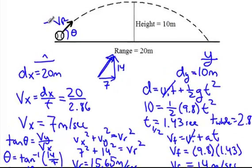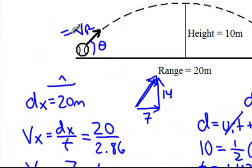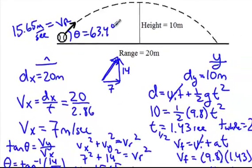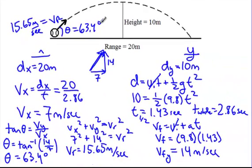So my resultant velocity is 15.65 meters per second, traveling at an angle of 63.4 degrees. This is how we do one of these full projectile motion problems. Hope this helped — this is Mr. Aden, signing off.